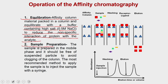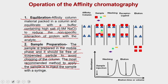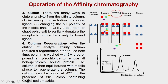You then prepare the sample in the mobile phase, which should be free of suspended particles to avoid clogging the column. The most recommended method to apply the sample is to inject it with a syringe. After applying the sample, you perform a washing step — washing the column with a high-salt buffer that does not break the receptor-ligand interaction but is strong enough to wash away all proteins that have non-specifically adhered to the matrix.